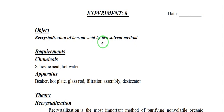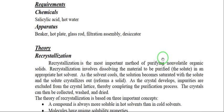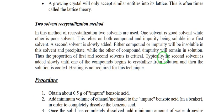For requirements — note there is a typing error in the case of benzoic acid here. The equipment needed includes a beaker, hot plate, glass rod, filtration assembly, and desiccator. In theory we have seen what recrystallization is and how to perform the two solvent recrystallization method.